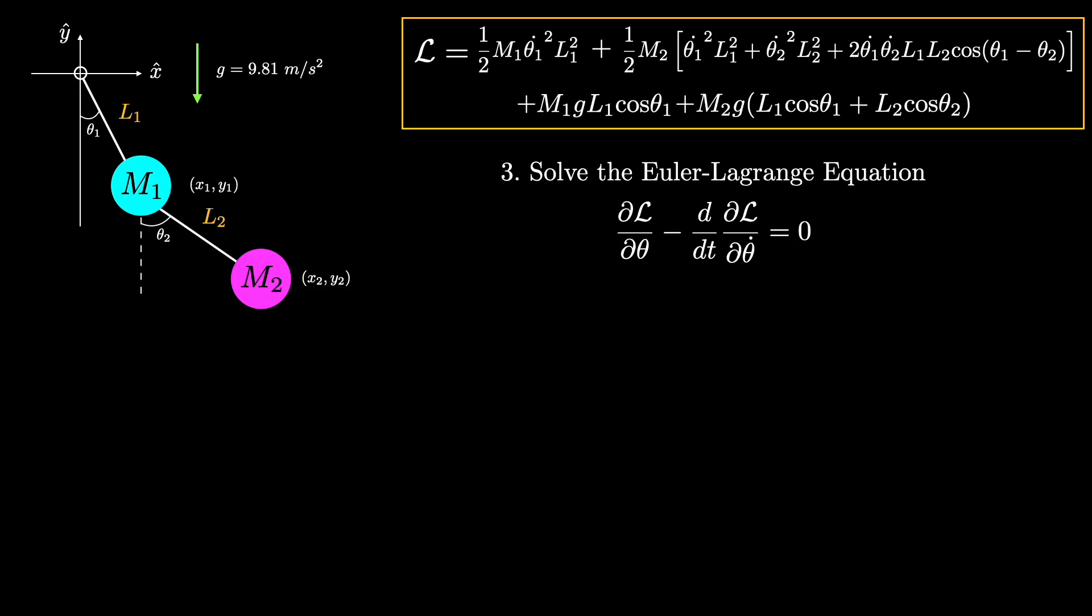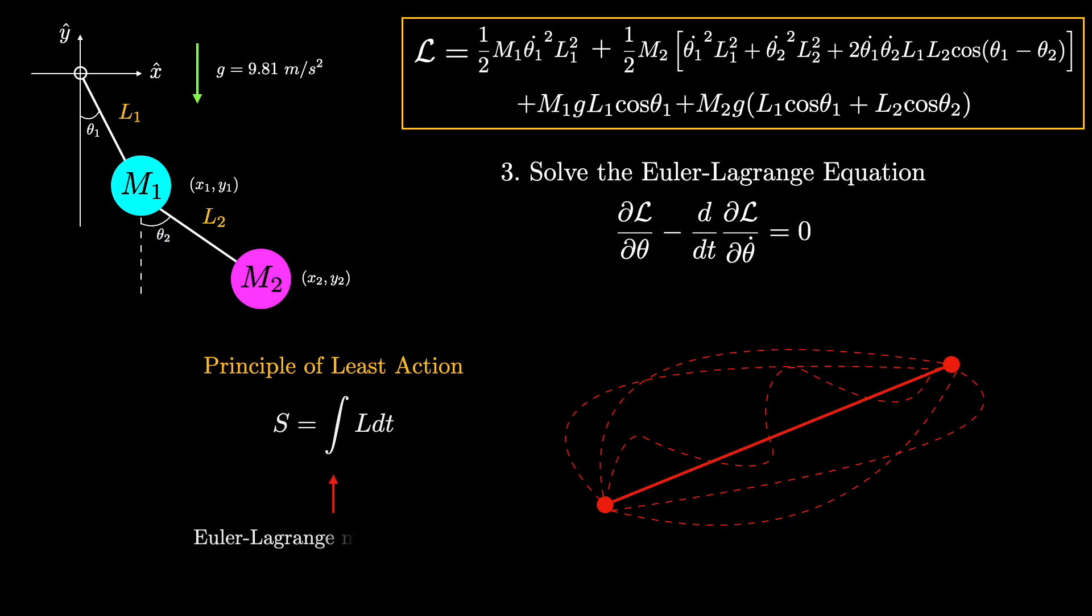There is a powerful principle that shows up almost everywhere in physics known as the principle of least action. What it says is that of all the possible paths that a particle could take, the one that it will always take is the one that minimizes the action, which is defined as the integral of the Lagrangian. And the Euler-Lagrange equation is the condition that needs to be satisfied for the action to be minimized. Now I can't stress enough how ubiquitous the principle of least action is. It shows up in general relativity, classical mechanics, quantum mechanics, quantum field theory, and other areas too.